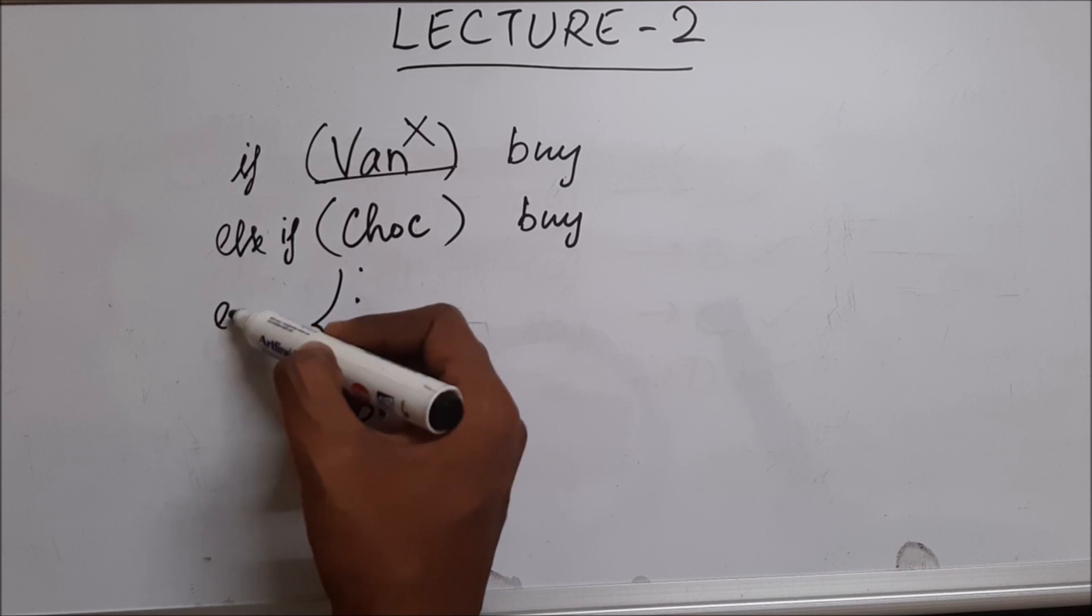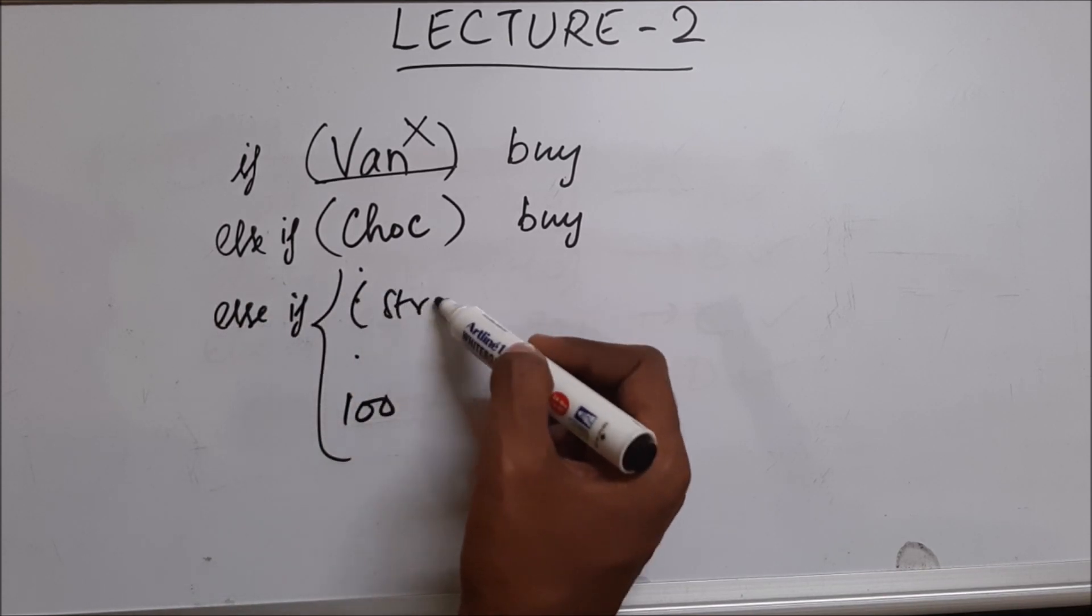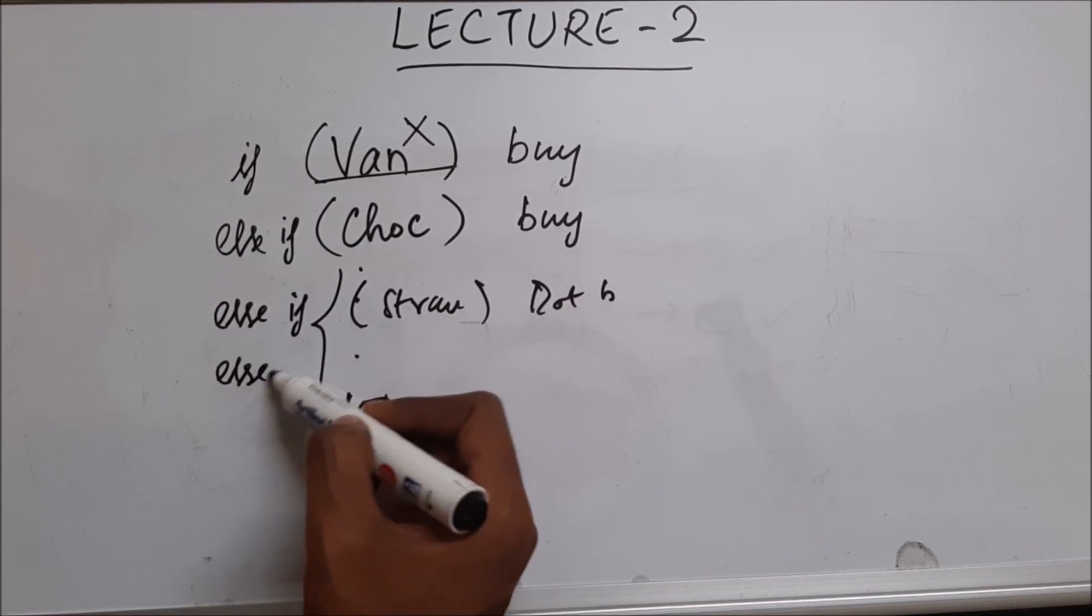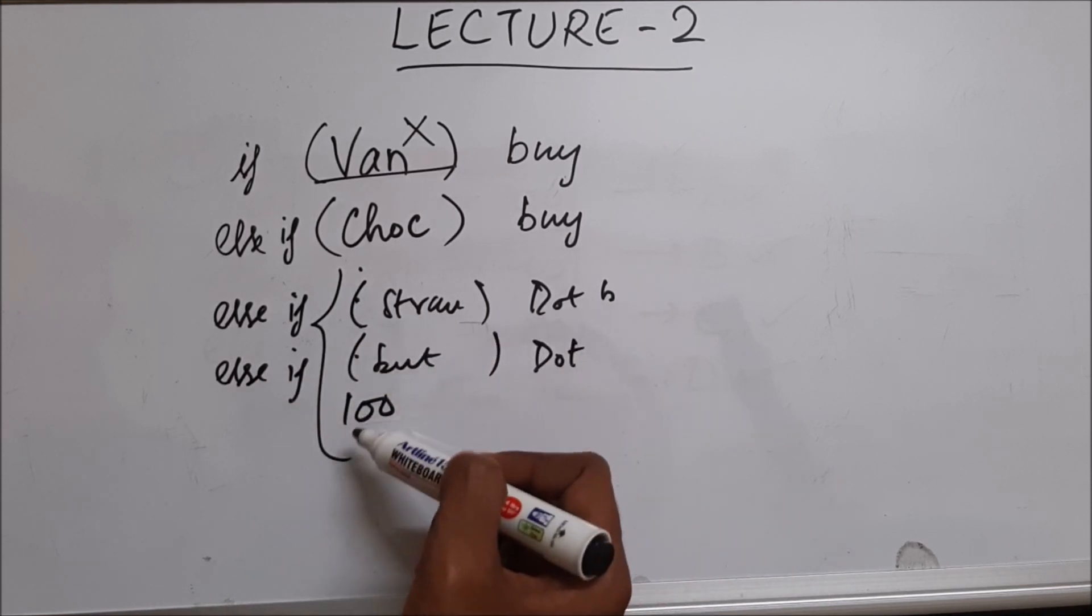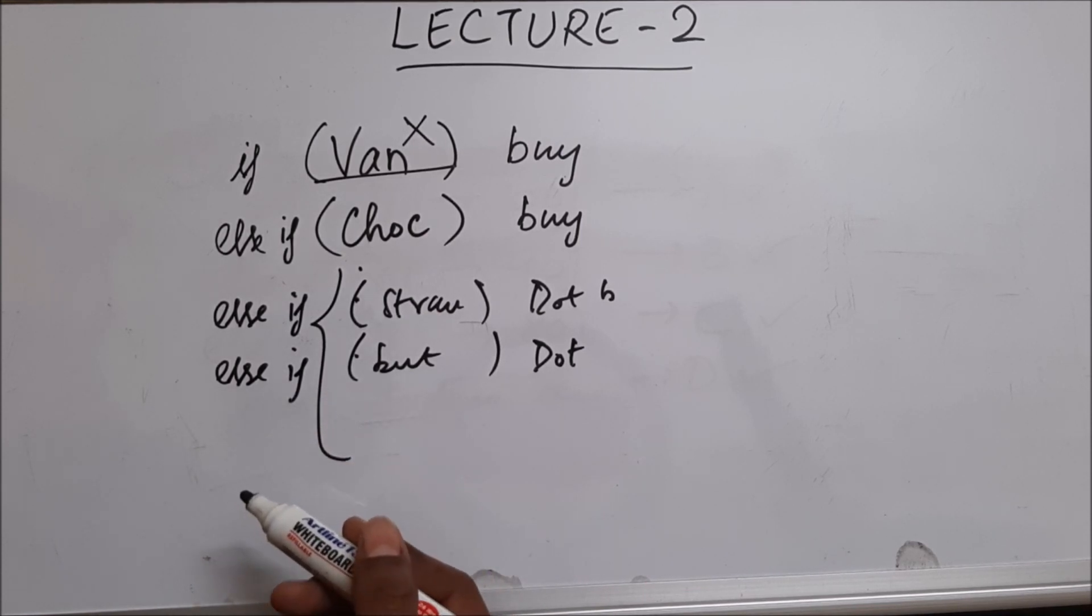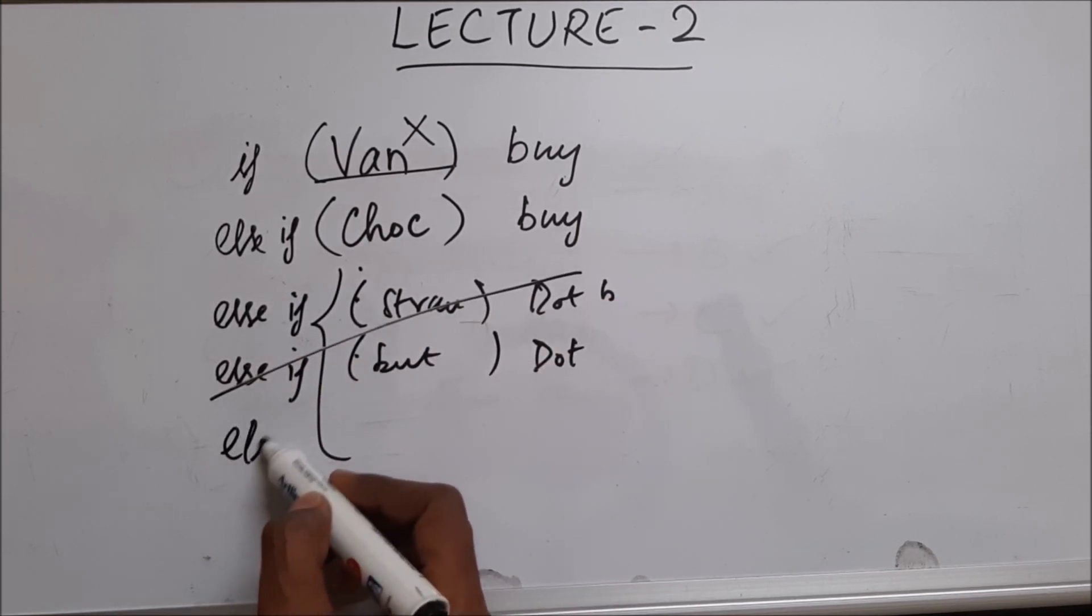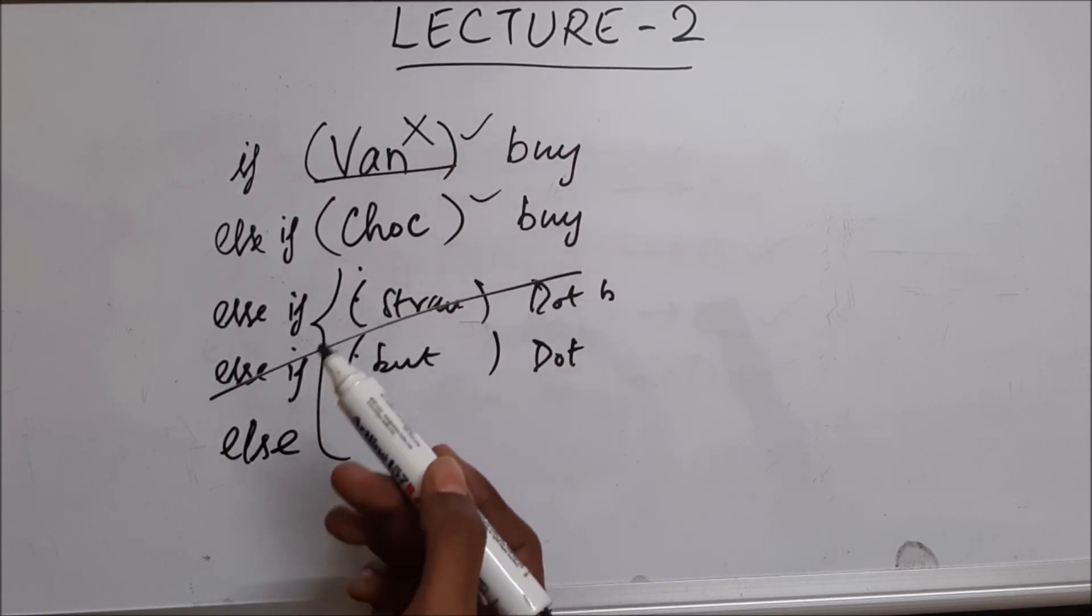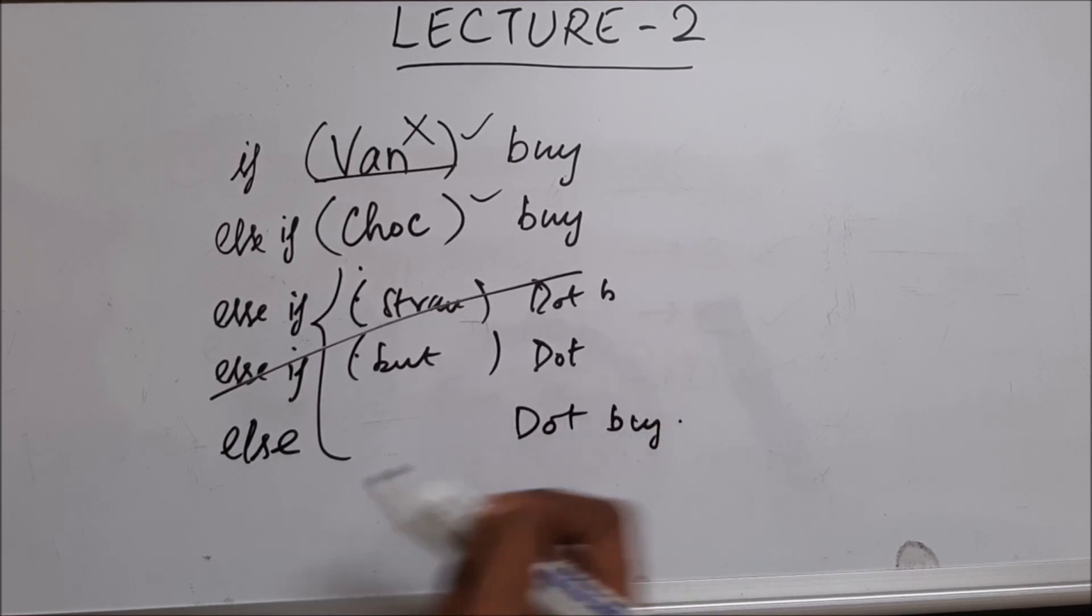If chocolate is also not present and you don't want to eat the rest of the 100 flavors, you will not say else if it is strawberry then don't buy, then another else if for butterscotch then don't buy. There might be another 100 flavors. You cannot write else if for all the 100 flavors. So instead of all this, you'll simply write one else. It will represent all the remaining things other than these two, and you'll say don't buy.